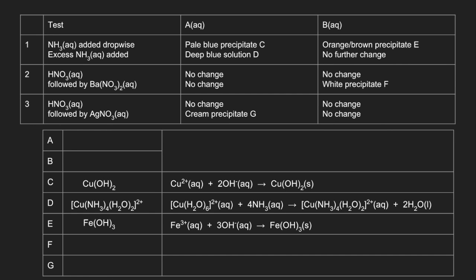So if we look at test 2 now, there was no change for A for either of those. But for B, we got a white precipitate when the barium nitrate was added after the nitric acid. So F must be barium sulphate and the equation for its formation looks like that.